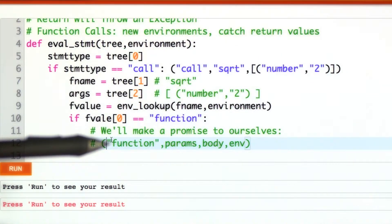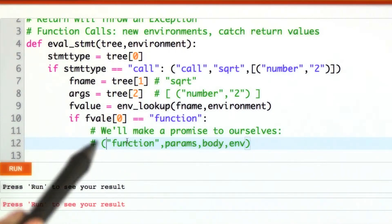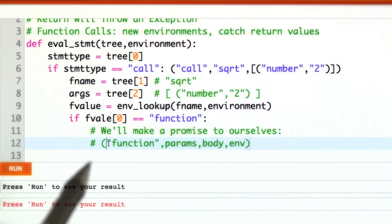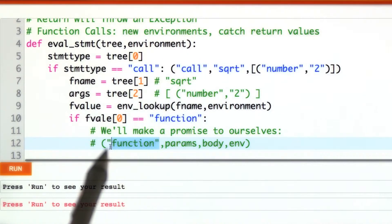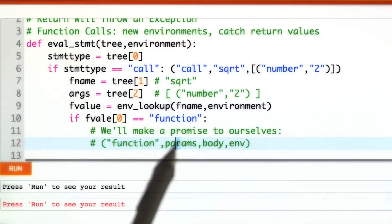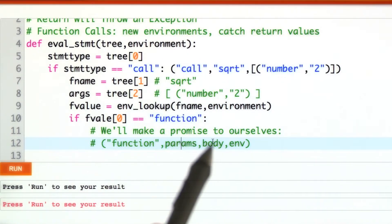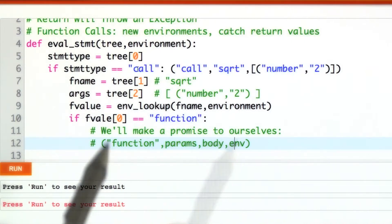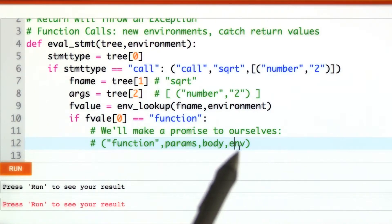We're going to have to decide what it means for something to be a function. For something like an integer or a string, we can just use a Python integer or a string. For a function, we're going to use a tuple, where the first part is function, so that we know one when we see it. Then there's a list of formal parameters, then there's the body, and then there's the environment, and we'll see how that comes into play later.